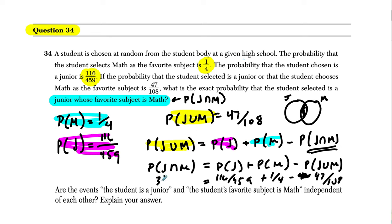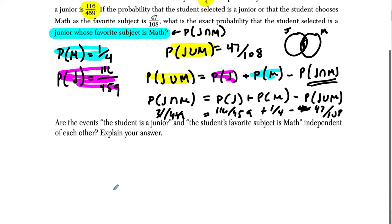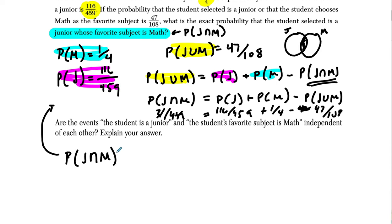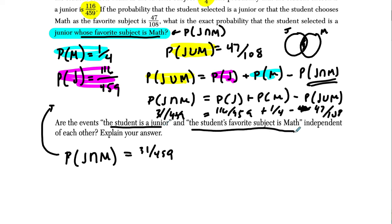So this is 31 out of 459. I'm running on a really uneven surface here so I'll scroll down and restate that. For part one, the answer for the probability that they are a junior and math is their favorite subject — whose favorite subject is math — is 31 out of 459. And they want to know: are the events 'the student is a junior' and 'the student's favorite subject is math' independent of each other? They want us to explain our answer.